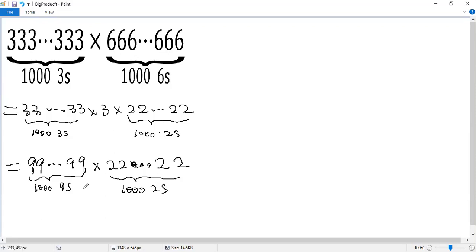At this point, we use a trick. We know 99 equals 100 minus 1. 999 equals a thousand minus 1. We use the same trick. So we get 1 followed by a thousand zeros minus 1 times a thousand twos.